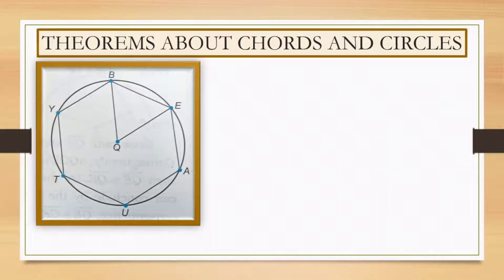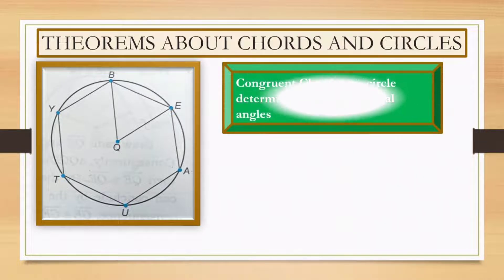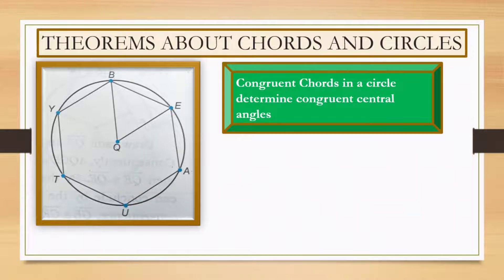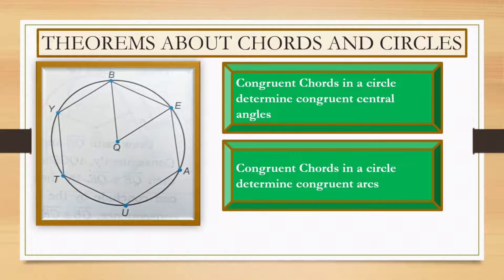What are the key concepts with this figure? First, congruent chords in a circle determine congruent central angles. And, of course, congruent chords in a circle determine congruent arcs.